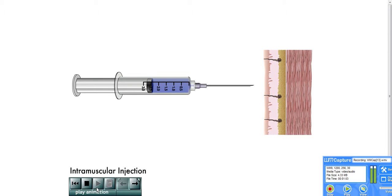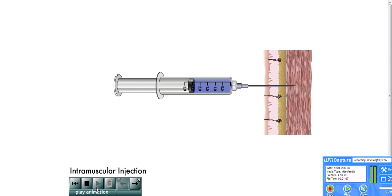In a standard intramuscular injection, the needle is inserted at 90 degrees through the layers of the skin into the muscle layer beneath.